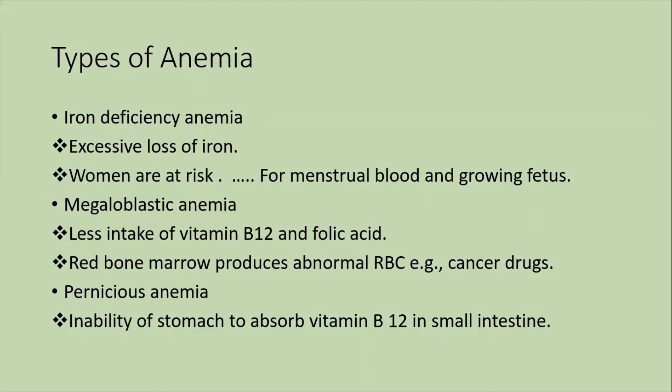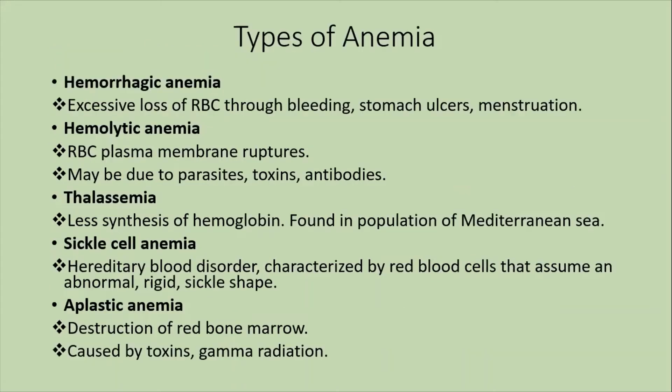Megaloblastic anemia results from less intake of vitamin B12 or folic acid, causing the red bone marrow to produce abnormal red blood cells. Chemotherapy or cancer drugs can also cause red bone marrow depression and abnormal red blood cell production. Pernicious anemia is the inability of the stomach to absorb vitamin B12 in the small intestine.